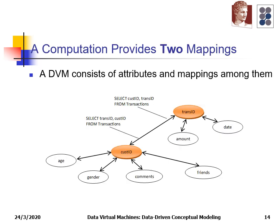A process can provide two mappings. Using SELECT customer_id, transaction_id FROM transactions, we map one or more transaction IDs to a customer ID. However, the same process can also be used in reverse to map customer IDs to transaction IDs.